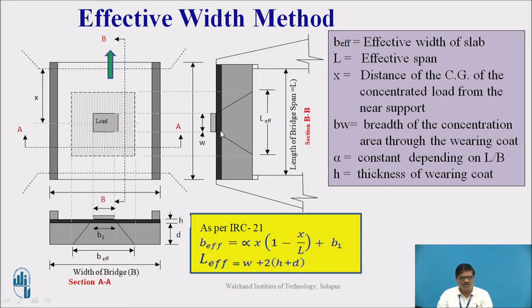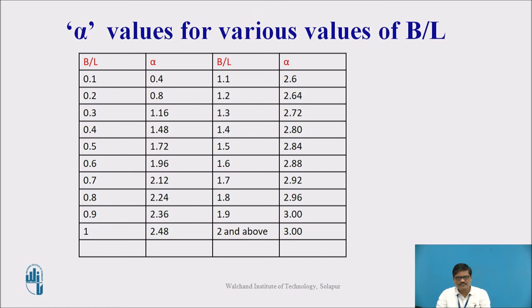We do not have any equation as such for finding L effective. Simply, you have to go for a 45 degree dispersion, we get L effective. In this way, it is observed that the B effective and L effective will give me another area which is under the influence of the given loaded area. And that effective area, we need to consider for the calculation.